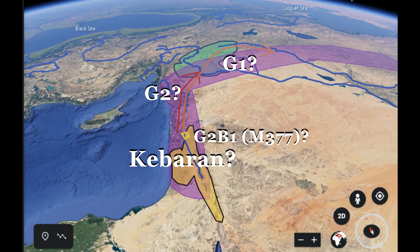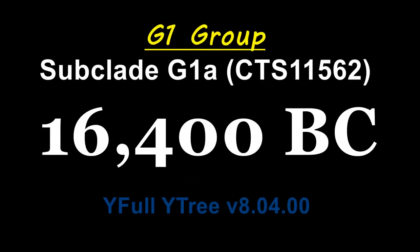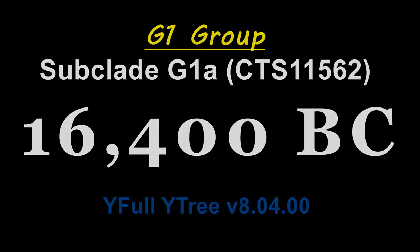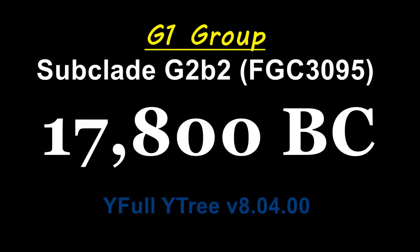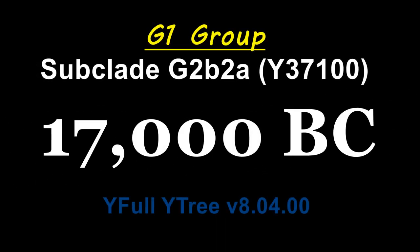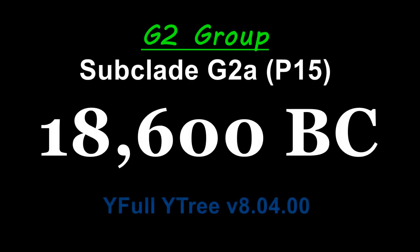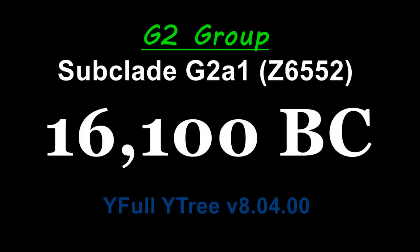The initial G1 group or tribe consisted of several G1 and G2 subclades. The G2 group or tribe consisted of G2a, which formed around 18,100 BC, G2a1, which formed around 13,800 BC.